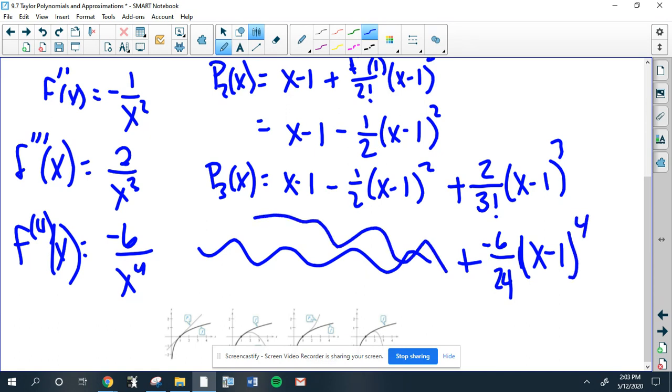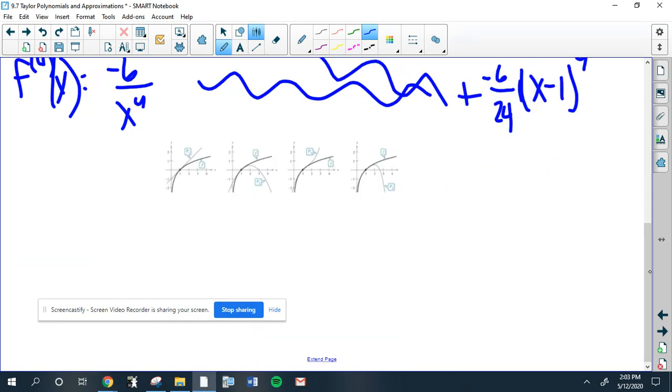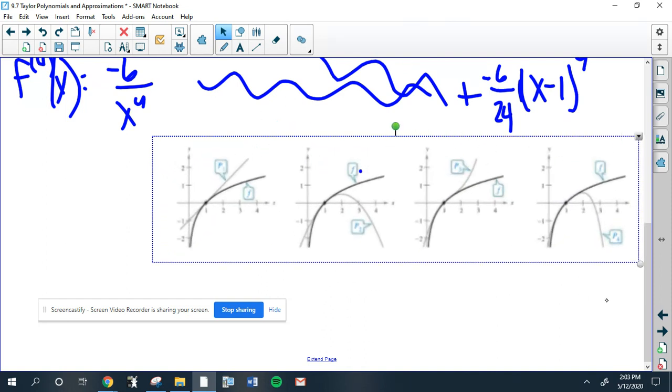So it's all of this plus that. Now the last thing I want to show you is this: So what does it mean, what does it all mean, what do we do? If we wanted to approximate, say, the natural log of 1.1111 whatever...